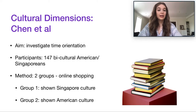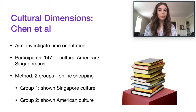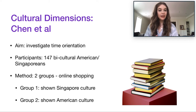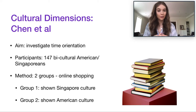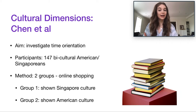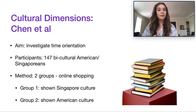The study had 147 bicultural participants based in Singapore. In Singapore, there's a high proportion of Americans who live there but identify as both American and Singaporean — quite a big expat culture with a lot of merging of the two cultures. This presents a great opportunity for psychology, as both a western and an eastern culture are merged into one. The participants who identified as bicultural were split into two groups: one group was shown pictures triggering Singaporean culture, and the other was shown pictures triggering American culture.